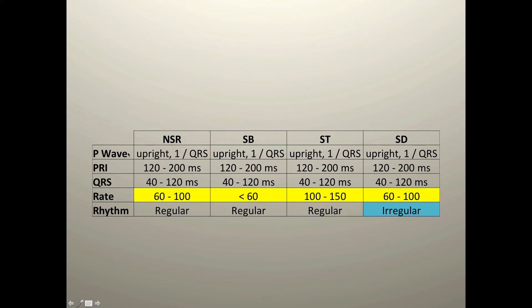We look for a P wave — is it upright, is it nice and rounded and smooth? Is the PR interval within a normal duration range? Next, what's the QRS duration? Generally, the QRS duration will fall within 40 to 120 milliseconds — your books may say 80 to 120 or 60 to 120 — but importantly the QRS complex should not exceed 120 milliseconds to call it a sinus rhythm, although bundle branch block or aberrantly conducted situations can cause longer QRS complexes, which we'll discuss in another video.